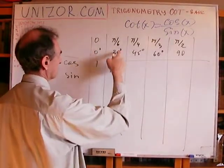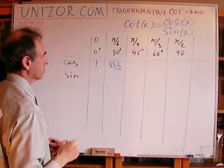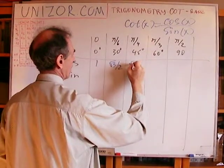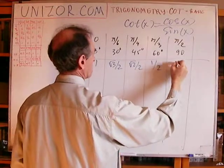Cosine at 0 is 1. Then, at 30 degrees, it's square root of 3 over 2, square root of 2 over 2, 1 half, and 0.